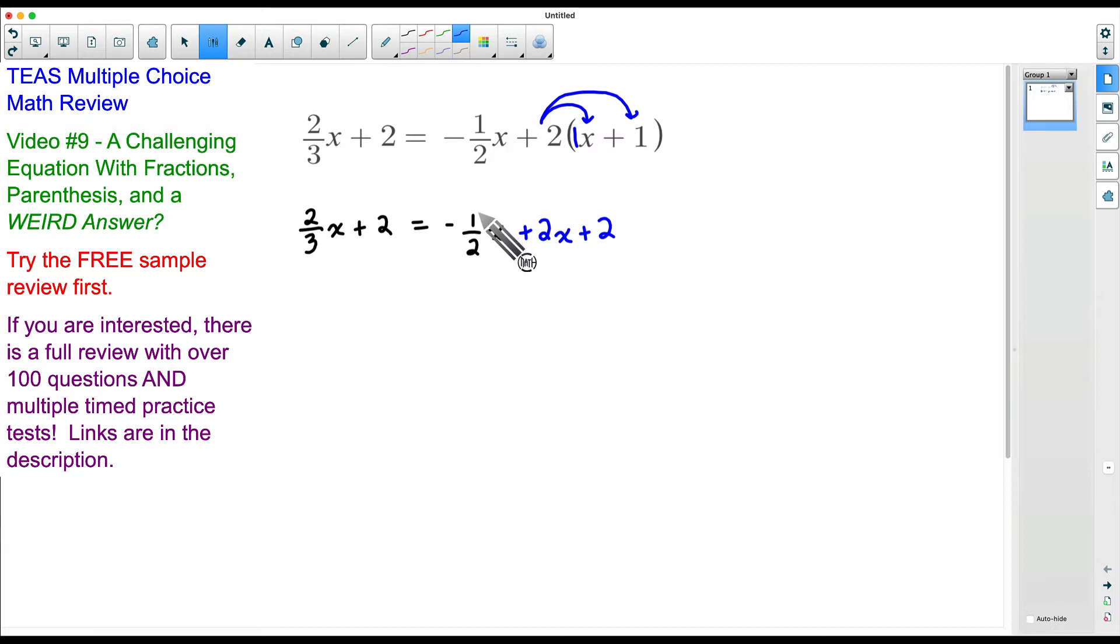Now there are a couple of options to solve this equation from here. We could combine these x's together over here on the right. We could leave these fractions in the problem, but what I like to do when I have an equation with fractions, I prefer to multiply both sides by a common denominator. And notice I'm doing this before I combine like terms, before I start moving things around. This is just personal preference. It will always work. But what is important here is that we multiply both sides, everything on both sides, by that common denominator.